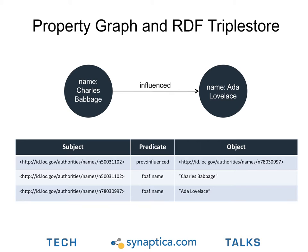In a triple store, we would denote the same by creating three sets of triples comprising subject, predicate, and object. In our example, we use the linked open data vocabulary provided by the Library of Congress, called the name authority file, to indicate the individuals we are referring to. Additionally, we choose to adopt well-known ontologies like PROV and FOAF to signify an associative relationship like 'influenced' and a string literal property like 'name'.